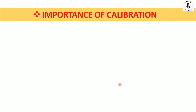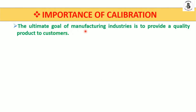Now, the importance of calibration. Basically, the ultimate goal of manufacturing industries is to provide a quality product to customers. Customers are interested in your product only if you use calibrated instruments in your measurements. During measurements there will be no errors, and due to calibration it will minimize the measurement errors, ultimately resulting in good quality products for the customers.